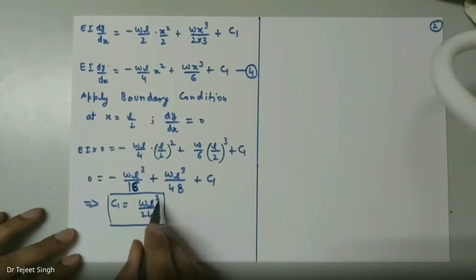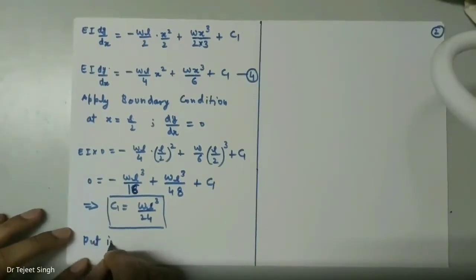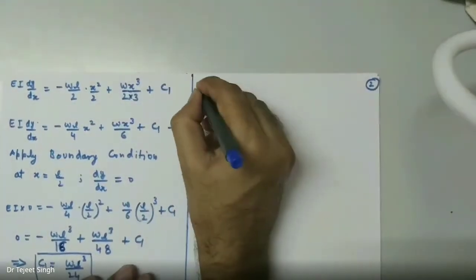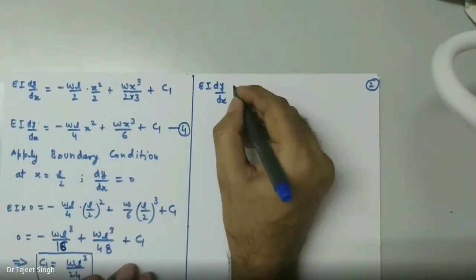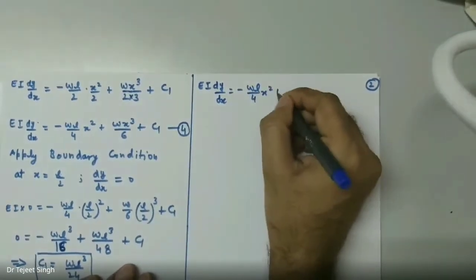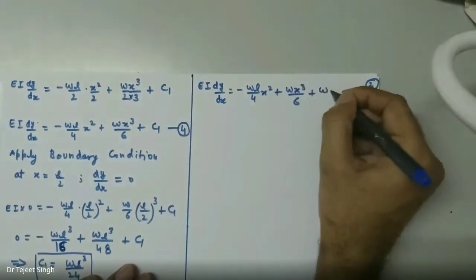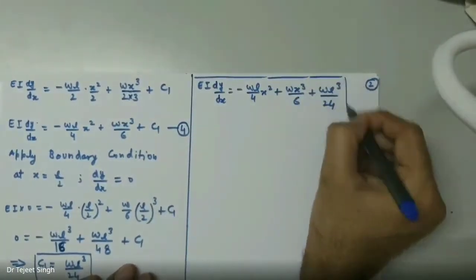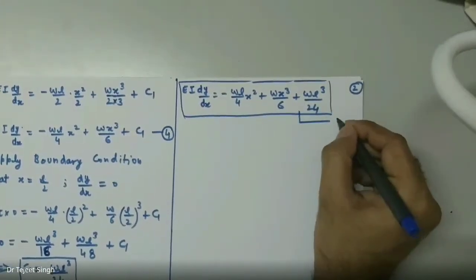Substituting C1 = WL³/24 back into equation four, we obtain the final equation of slope: EI·dY/dX = −WL/4 · X² + WX³/6 + WL³/24. I call this equation number five.